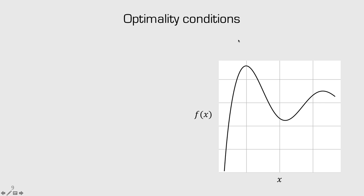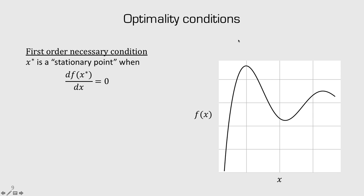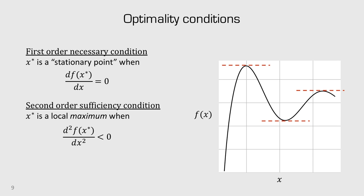There are a few conditions to know that we're at an optimum value. One of the first — which we just saw — is that the slope of the line tangent to the curve is equal to zero. This is known as the first order necessary condition. In this example, we see three stationary points where the slope is zero. The second order condition helps us understand whether a stationary point is a maximum or a minimum. It is a maximum when the second derivative is less than zero — the second derivative tells us something about the curvature.